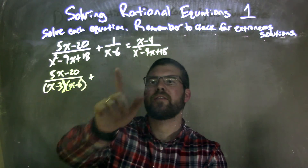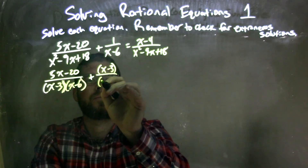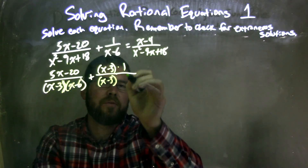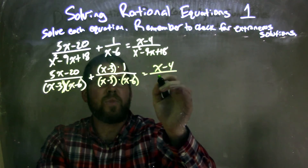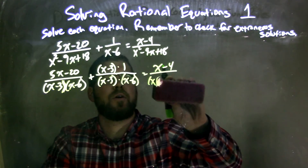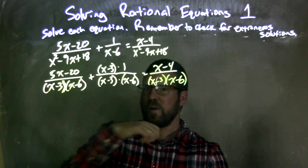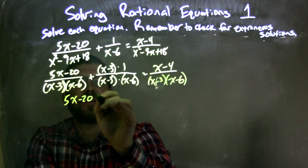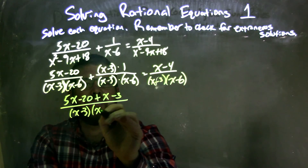Now I can rewrite this — I want it to have the same base. So I'm going to multiply the 1 over x minus 6 term by x minus 3 over x minus 3, giving me 1 times x minus 3 in the numerator. That leaves me with the same denominator: 5x minus 20 plus x minus 3 over x minus 3 times x minus 6, and that equals x minus 4 over x minus 3 times x minus 6.